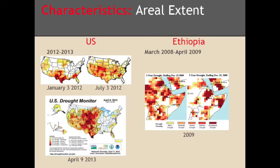The U.S. drought began in the spring of 2012 and has continued to 2013, where 65% experienced moderate to exceptional drought conditions. The bottom left image shows that the drought is still affecting the nation as of April 2013, mainly caused by low rainfall intensified by high temperatures.